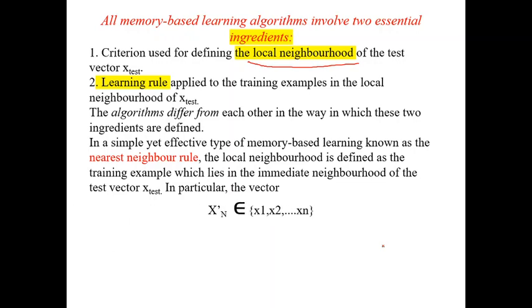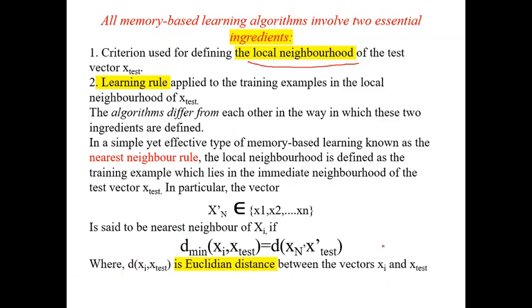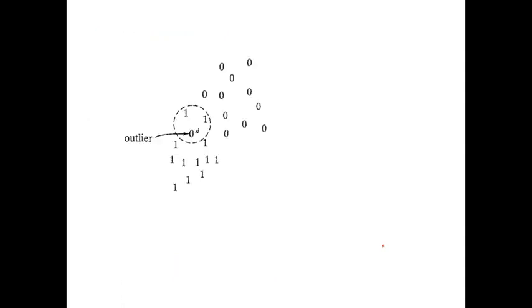Mathematically, it can be considered as X dash N belongs to X1, X2 up to XN. It is said to be nearest neighbor of XI if D min of XI comma X test equals to D of XN comma X dash test. Whereas, this D of XI comma X10 is denoted as Euclidean distance between vector XI and X test.